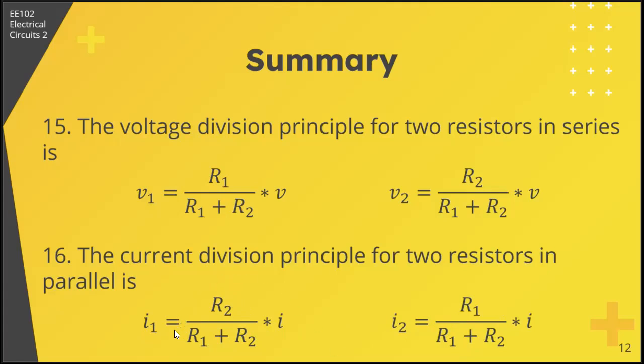Or, you can say that the current that goes through a resistor is inversely proportional to its resistance. So I1 is inversely proportional to R1, and I2 is inversely proportional to R2.